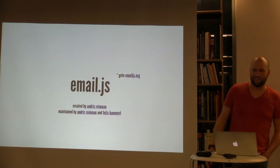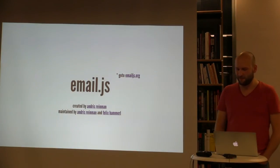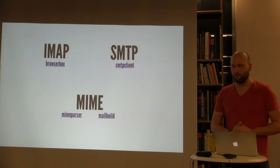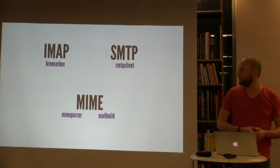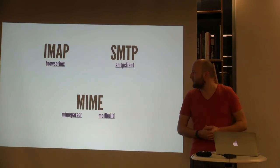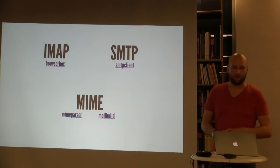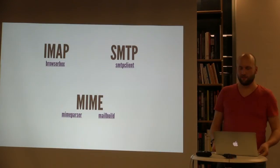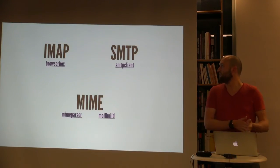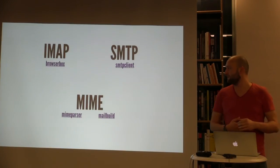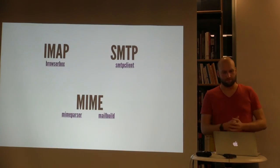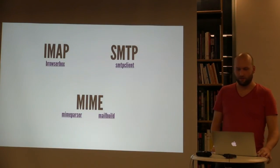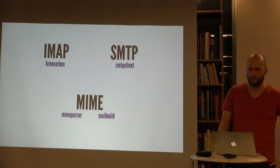So, hello email.js. This library was created by Andrus Reinman; I am one of the maintainers. It is based on three or four pillars, depending on how you look at it. First is IMAP handling, done by a library called BrowserBox. Second is SMTP handling, done by the SMTP client. And then we have reading and writing MIME, done by two libraries called MIMEPars and MailBuild.